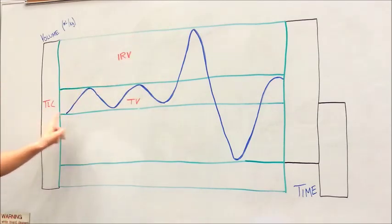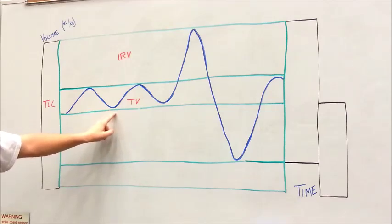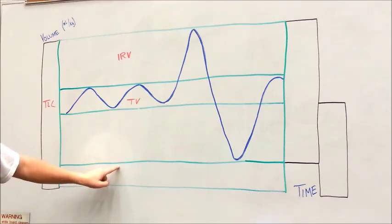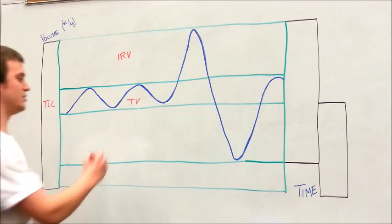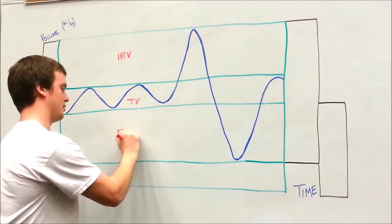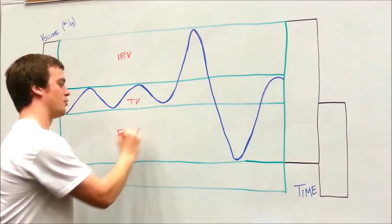The difference between the minimum of tidal volume and this line down here, which I'll explain in a little bit, is known as expiratory reserve volume, or ERV.